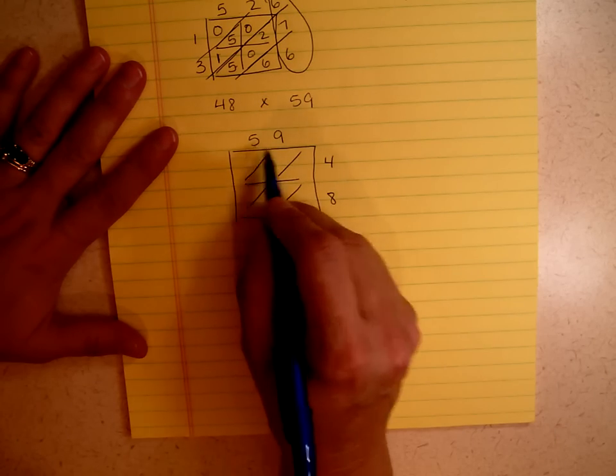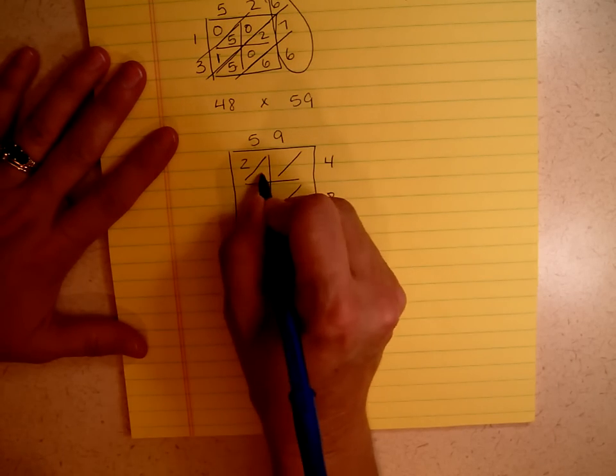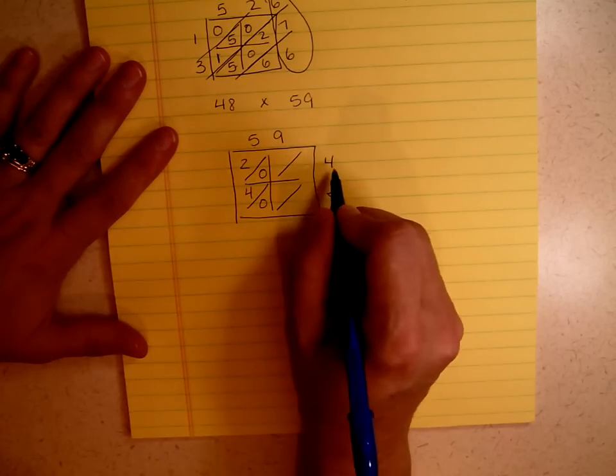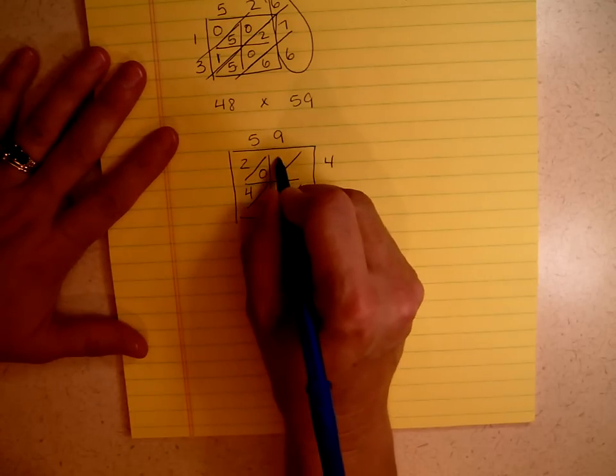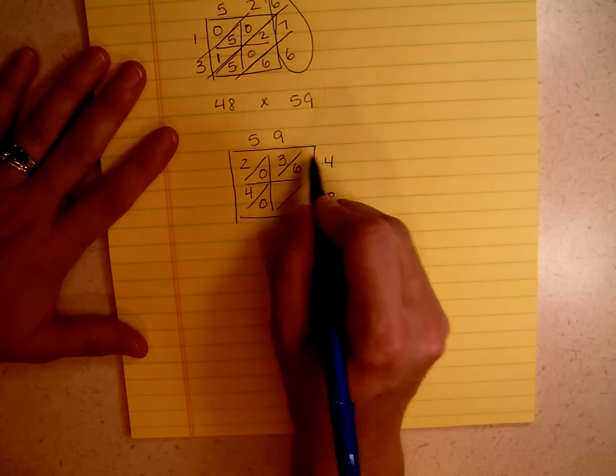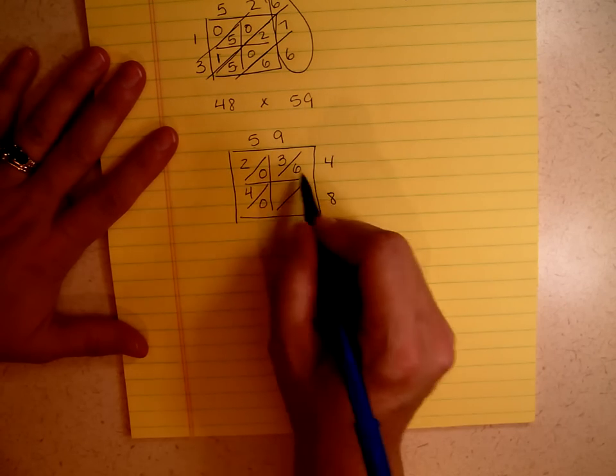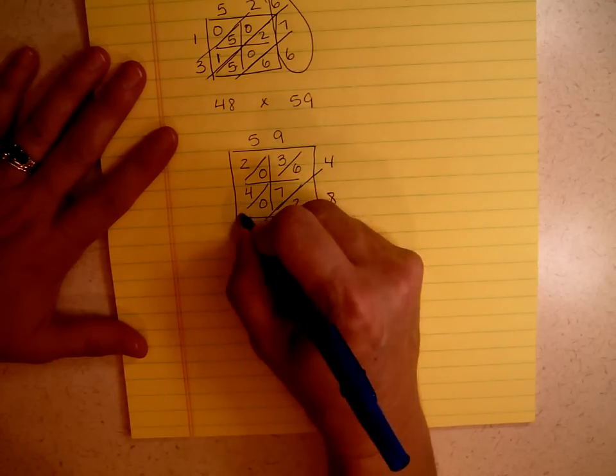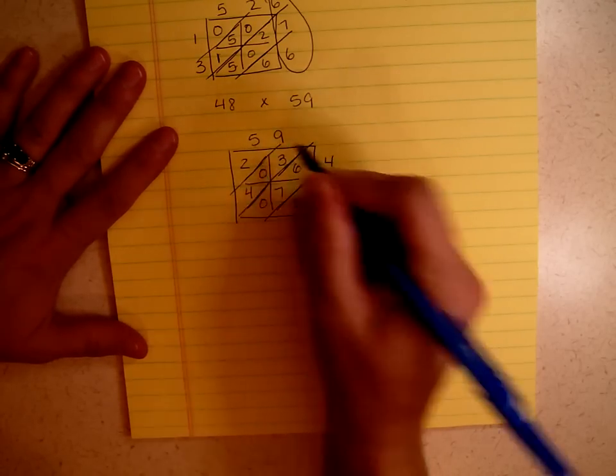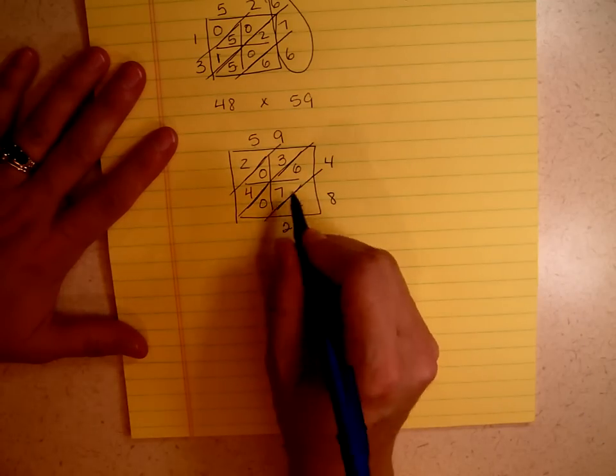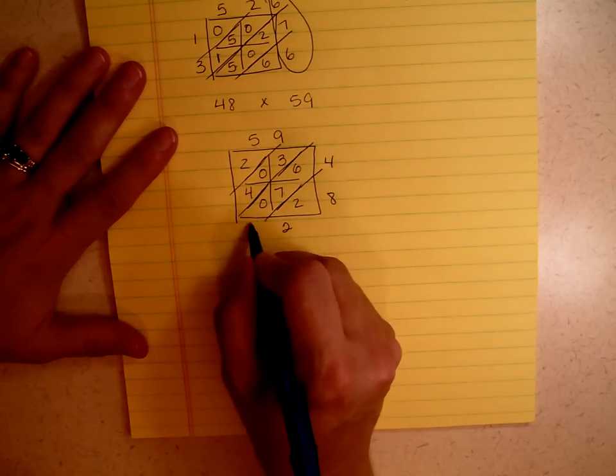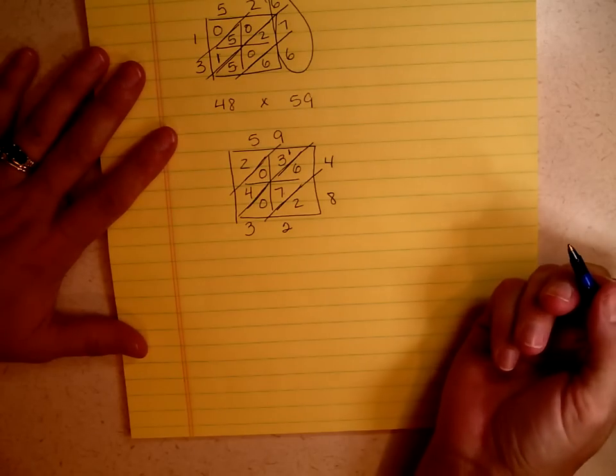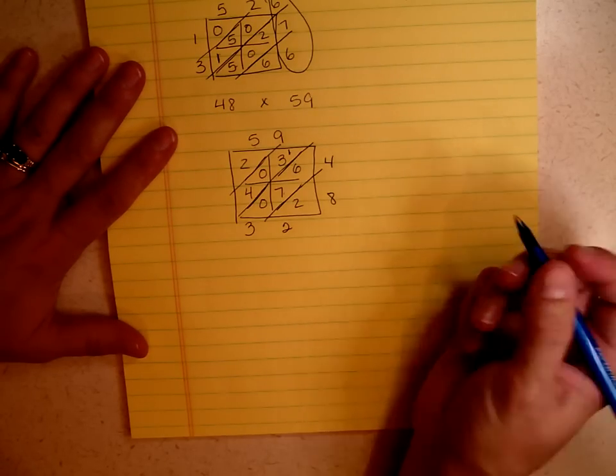And let's start. 5 times 4 is 20. 5 times 8 is 40. 4 times 9 is 36. And 9 times 8 is 72. And I'm going to extend these lines. Let's see what we come up with. A 2. 6 and 7 is 13. So I'm going to put my 3 there, and I'm going to put a little 1 right there, just like when we carried, when we did regular traditional addition.